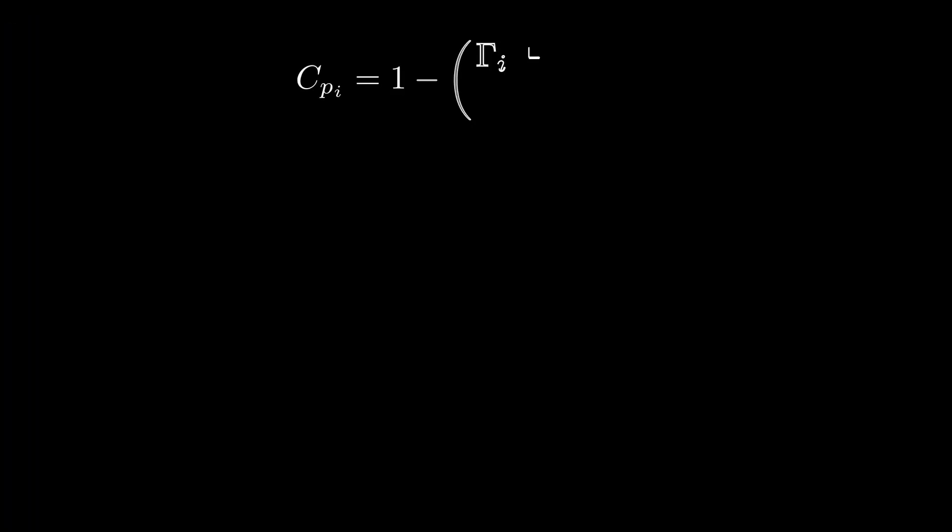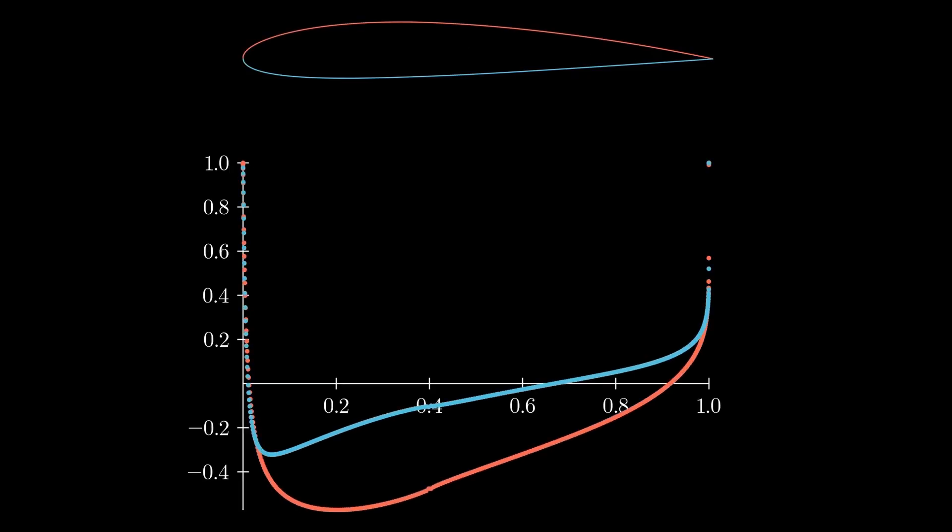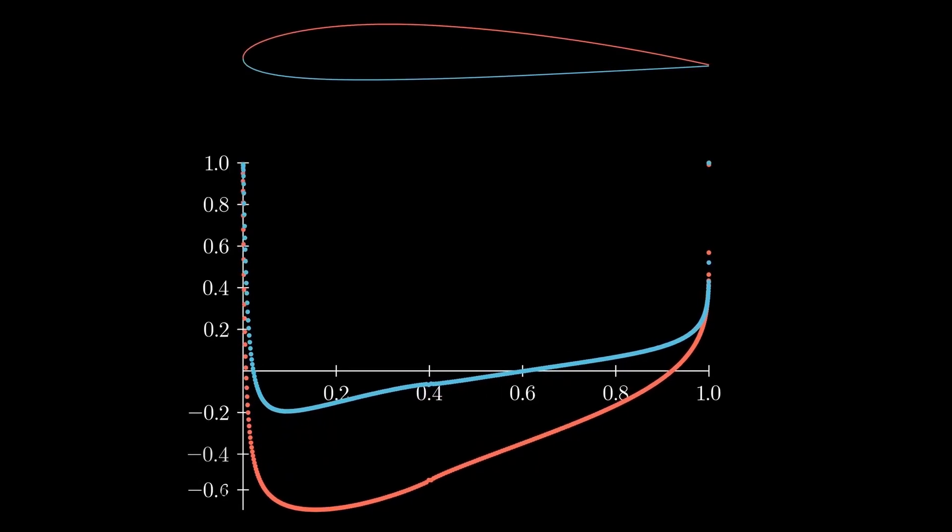Now we can plot the coefficient of pressure along the upper and lower surface. We do this by using this equation where we find the vortex strength at the middle of the panel and use this along with L being the distance between the two ends of the panel, those being the two vortexes. We do this for all the panels and when we plot it we get this.